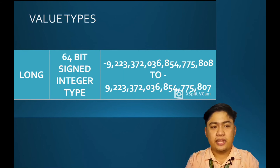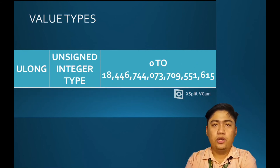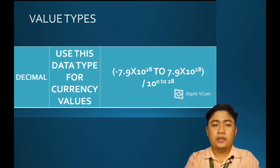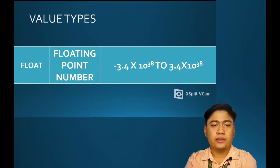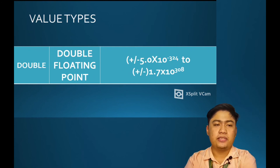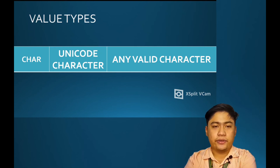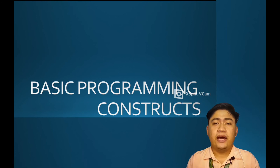Additional data types include ulong (unsigned long integer), decimal which is used for currency values, float for floating point or decimal numbers, double for double floating point, and char for unicode characters.